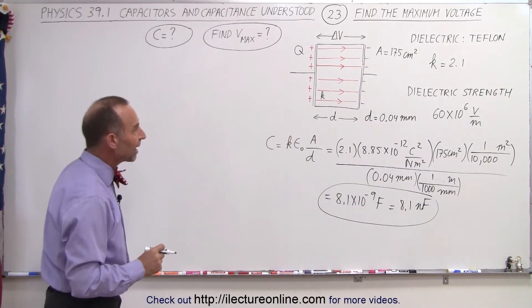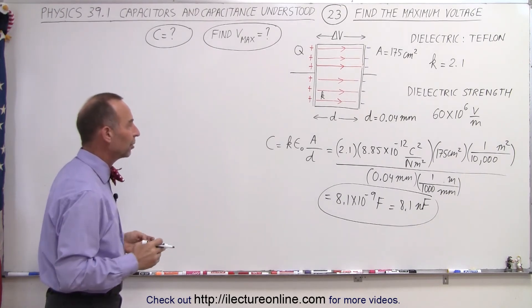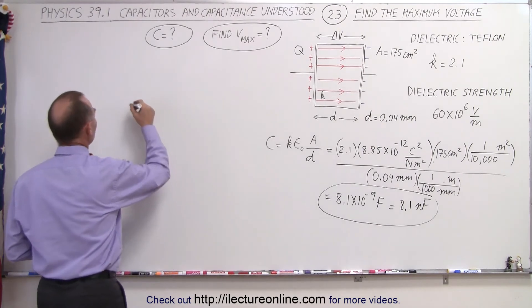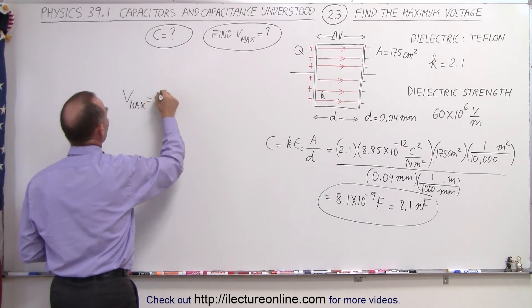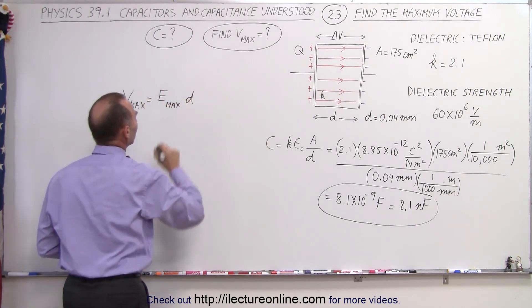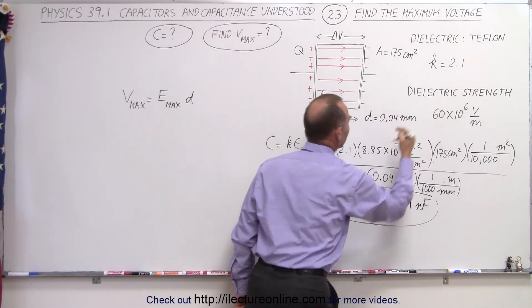Now let's find the maximum voltage allowed to be applied to that capacitor before we exceed the dielectric strength. So in this case, V max is going to be equal to the maximum electric field that's allowed times the distance between the plates. The maximum electric field will be equal to the dielectric strength.